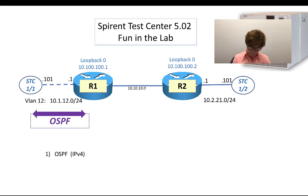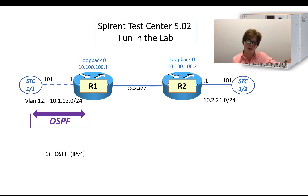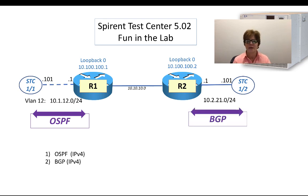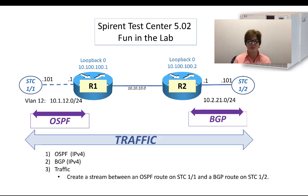In the OSPF video we had VLAN 11 and VLAN 12 — two different ways of configuring and starting up OSPF. We're only going to use VLAN 12 in this one, so we have OSPF IPv4. All of this would still work for IPv6 as well. We have BGP up and running, and now we're going to do the traffic.